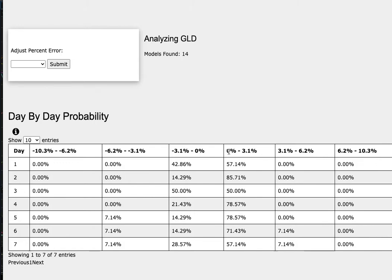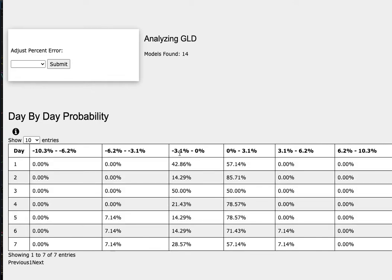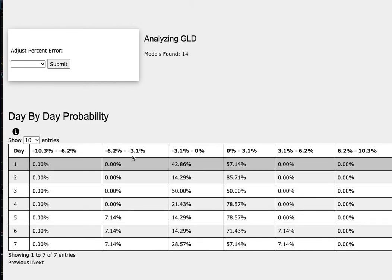To the downside, we have a 14 percent chance to fall between 0 to negative 3.1 percent, and in a further extreme case to the downside, a 7 percent chance to fall between negative 3.1 to negative 6.2 percent. If you enjoyed this content, feel free to like, comment, subscribe, and thank you for watching.